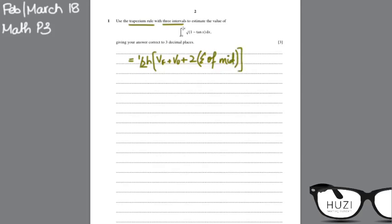To calculate the height, you take your upper limit minus lower limit upon the number of intervals, which is 3.